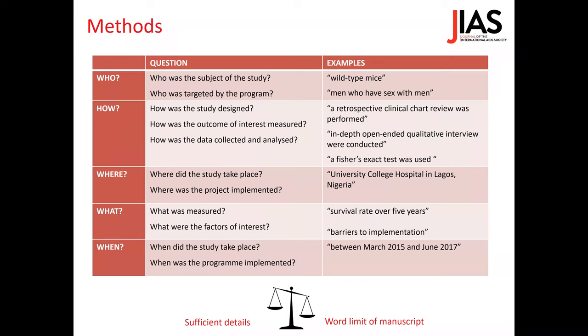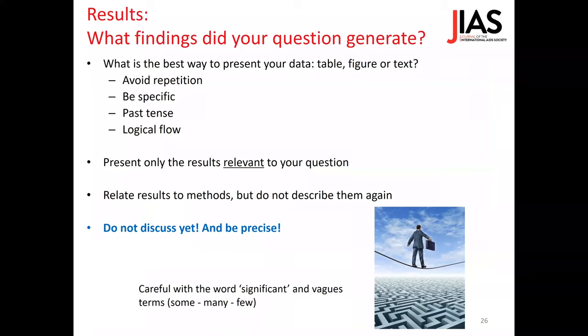Remember that you always have to find the balance between giving sufficient details and keeping in mind the word limit of the manuscript. In the results section, you should provide the findings of your study. Sometimes you have data that are better understood in tables, figures, or text. Avoid repetition and be specific. Use past tense and keep a logical flow. You should present only the results relevant to your question — you don't need to report all results if they are already in tables and figures. This is not the section to include any methods, and you don't discuss results yet.